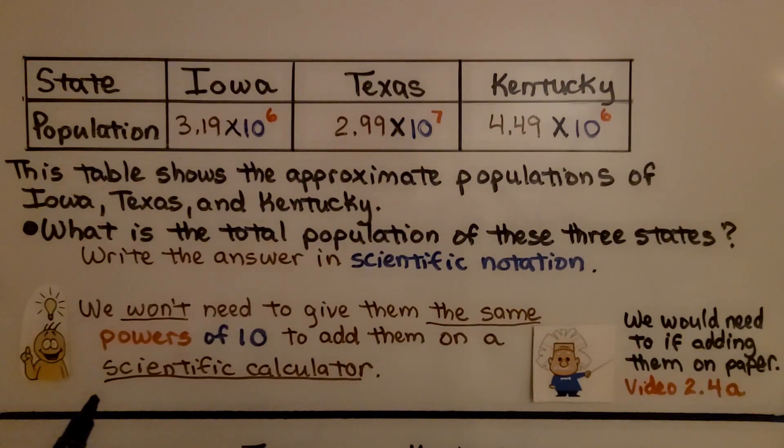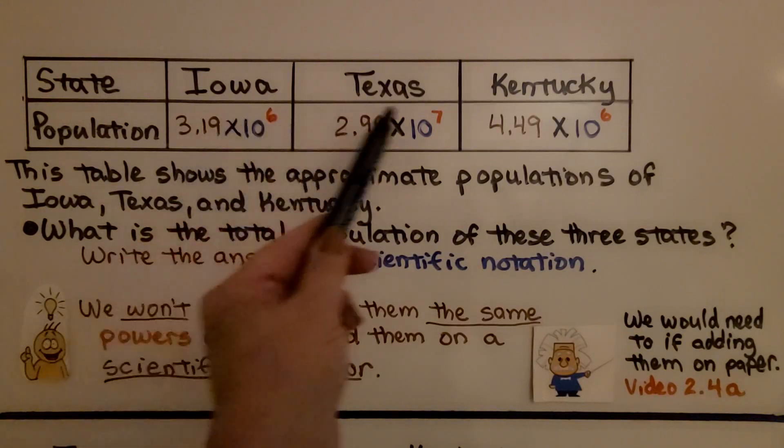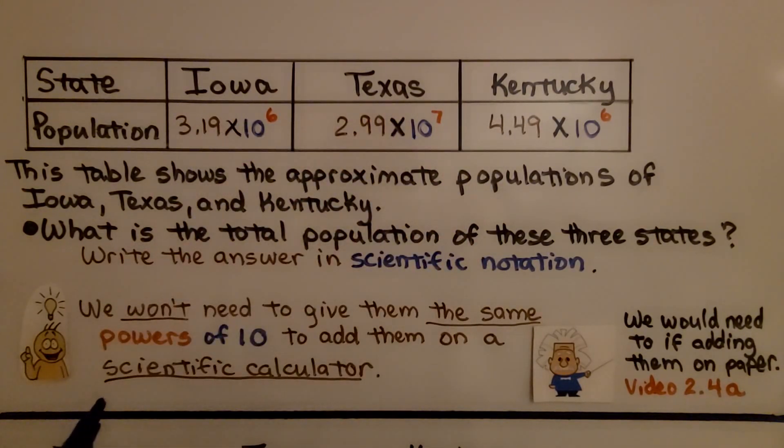Now, if you remember from the previous videos, we needed to change them all to the same power of 10 before adding them. We won't need to give them the same power of 10 to add them on a scientific calculator, but we would if we added them on paper. We learned that in video 2.4a, which is linked in this description.